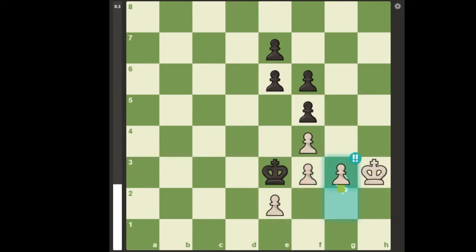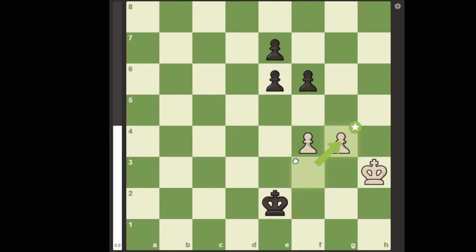But after pawn to g3 king takes e2, white plays pawn to g4. But now, the king isn't on e3, and after pawn takes g4 check pawn takes g4, black cannot take the F pawn. And since moving the king allows g5 and the g pawn will be promoting,